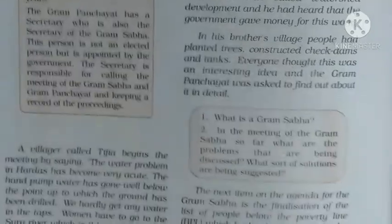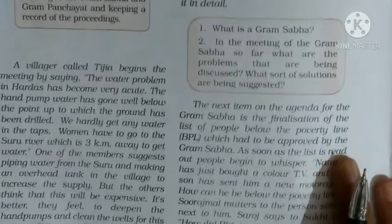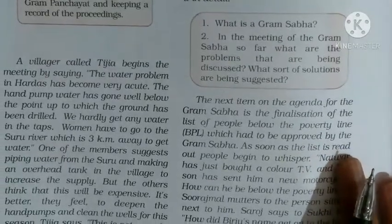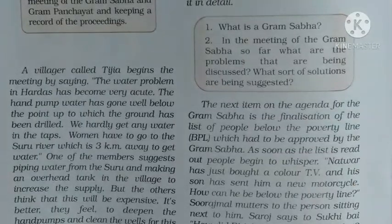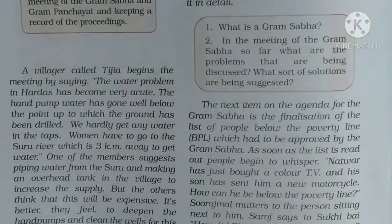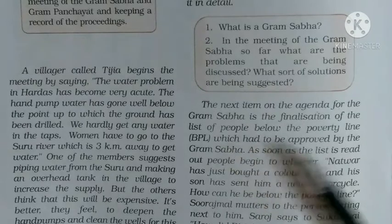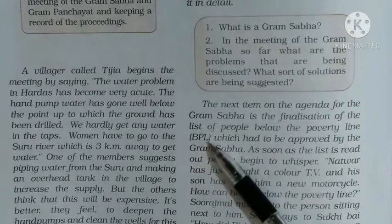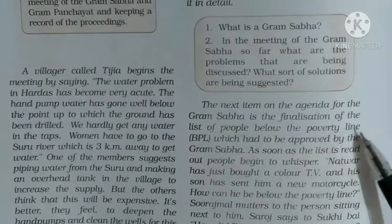The next item on the agenda for the Gram Sabha is the finalization of the list of people below the poverty line, which had to be approved by the Gram Sabha. The Gram Sabha is checking whether the names on the poverty line list are correct.